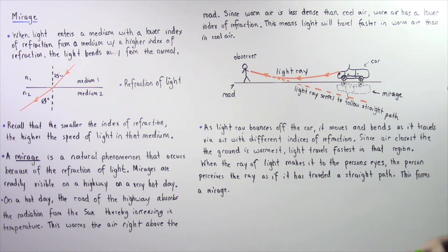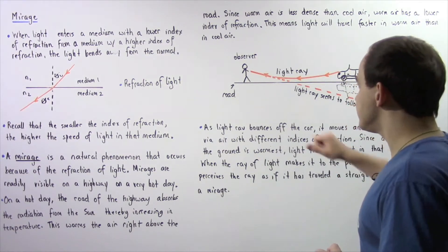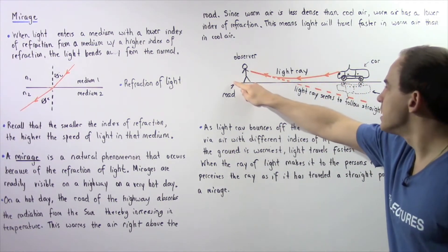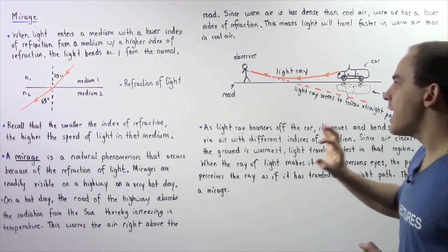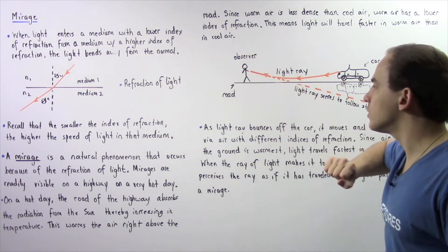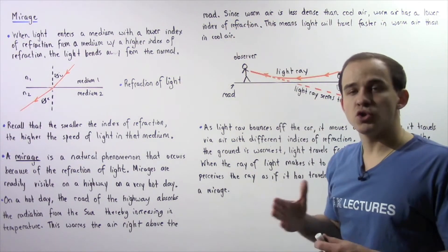Since warm air is less dense than cool air, warm air has a lower index of refraction, and this means light will travel faster in warm air than in cool air. Examining the following diagram, the air found right above the road is warmer than the air found higher up in this region.